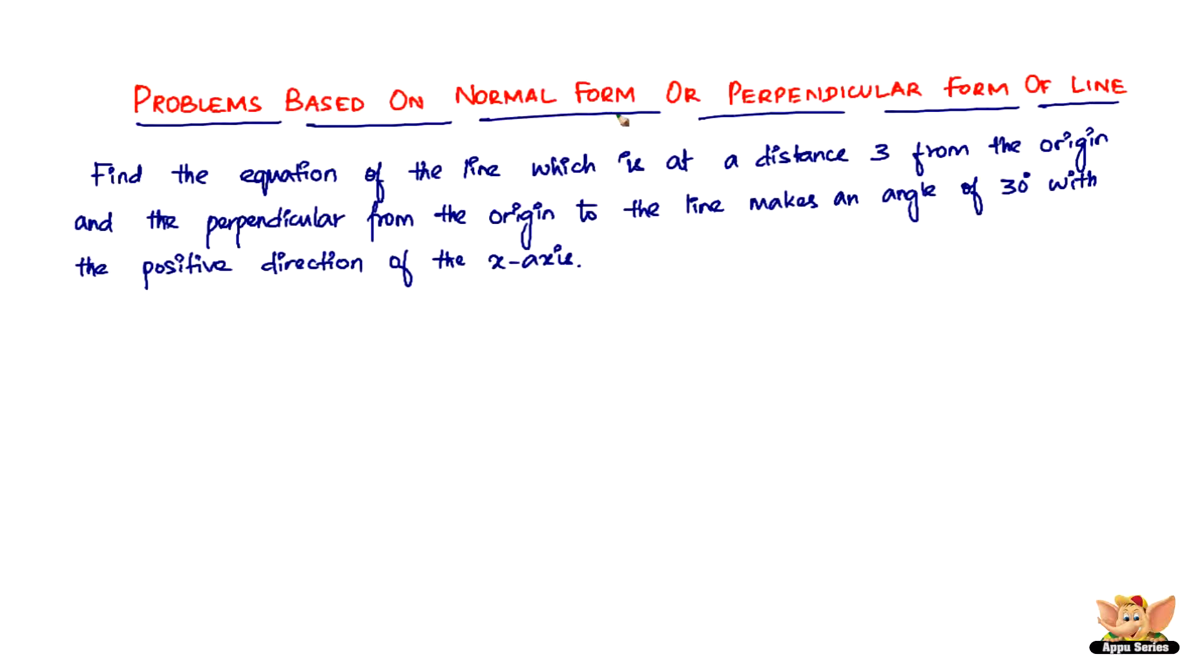Well, this is a problem based on the normal form or perpendicular form of a line, and the normal form or perpendicular form of line is given by the equation x cosine of alpha plus y sine of alpha equals p.